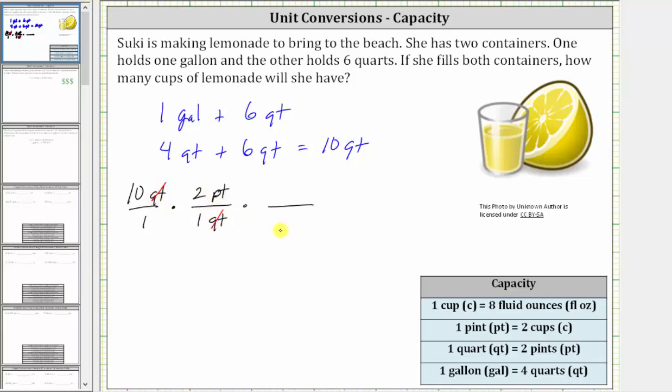And now we'll convert pints to cups using the conversion one pint equals two cups. Because we want pints to simplify out, we will have pints in the denominator and cups in the numerator. And since one pint equals two cups, we have one pint in the denominator and two cups in the numerator. And again, notice how the units of pints simplifies out. Notice now we're left with the units of cups.